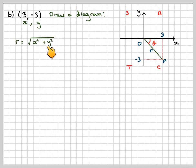So r will be √(x² + y²), which will be √(3² + (-3)²). That will be √(9 + 9), which is √18. 18 is 2 times 9, and the square root of 9 is 3, so this will be 3√2, simplifying using surds.